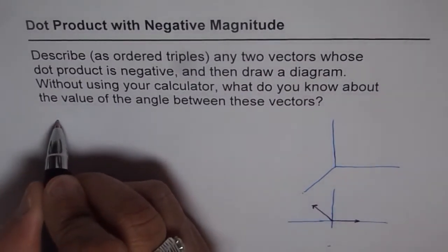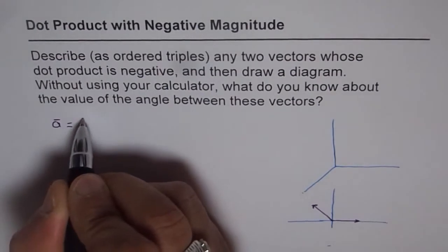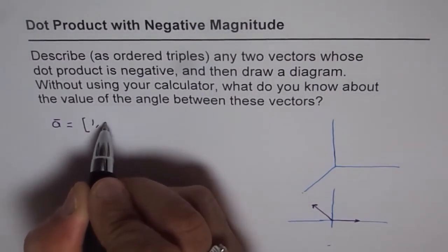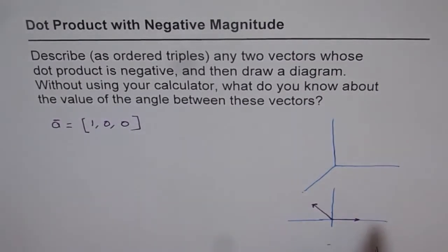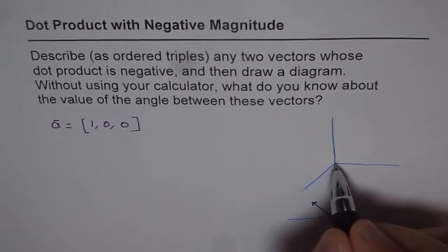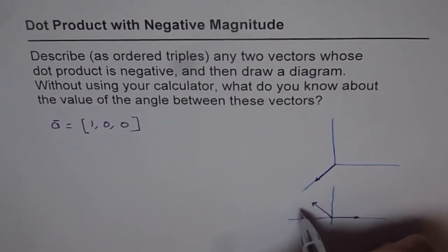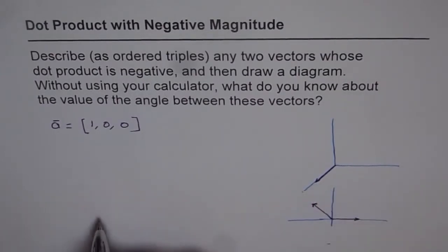So now in R3 we can select vectors as a which equals, let's say, one zero zero. So this is my unit vector along the x-axis.